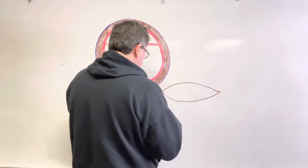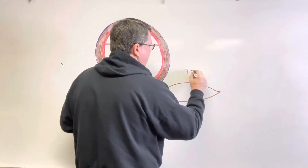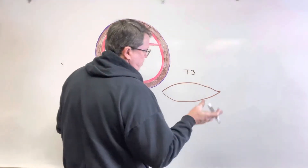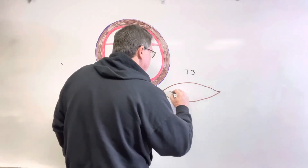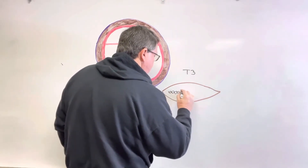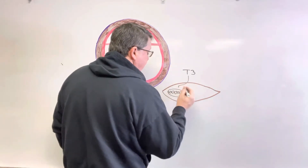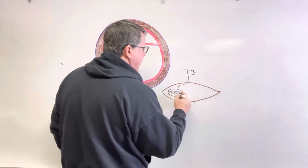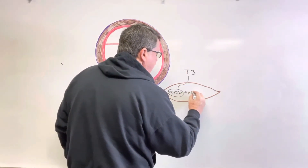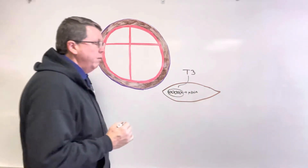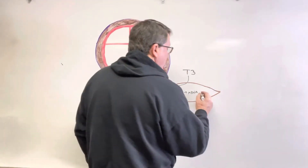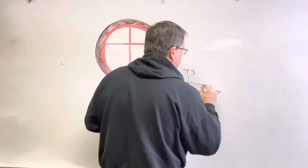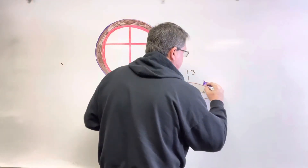So we're going to have our T3, and T3 is going to enter into the cell. Now T4 can do this too, but as we know, usually it's T3 that's the most active form — T4 is pretty much inactive. Once it comes inside, it's going to go to the DNA. My T3 is going to come down to the thyroid hormone receptor, interact with the DNA, and cause the DNA to make messenger RNA. Then the messenger RNA is going to go to the ribosome, and we are going to end up with something we call a beta adrenergic receptor.